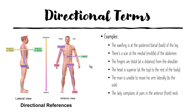We also have the term cranial, which refers to the cranial cavity — the head area. The opposite is caudal, which actually means tail. Humans don't have a tail, but do not confuse caudal with inferior — it hints at the level just before the limb area.